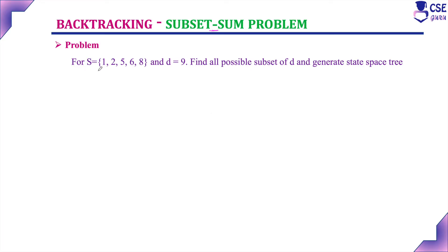The problem: S = {1, 2, 5, 6, 8} and the target sum D = 9. Find all possible subsets and generate the state space tree. Initially, the state space tree starts with the initial value of 0. With this initial value, we consider the next level component, which is the first item in the given set.